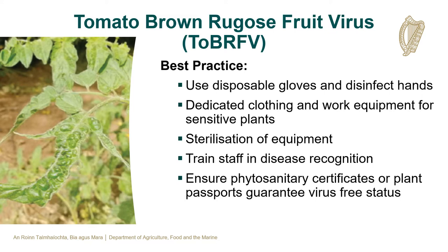Best practice to prevent the introduction and spread of Tomato Brown Rugose Fruit Virus includes the use of disposable gloves and disinfection of hands and plants. The use of dedicated clothing and work equipment for sensitive plants. The sterilisation of equipment before and after use. The training of staff in disease recognition and symptom recognition. Ensure phytosanitary certificates or plant passports guarantee virus-free status of the plants.